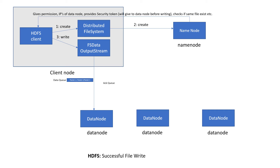We are talking here about the happy scenario where we don't have any kind of failure in the data node. Once the first packet is written to the first data node based on the block size, it will create a pipeline with another data node. In this example, we have taken three replications, so the file is going to be written in three places.